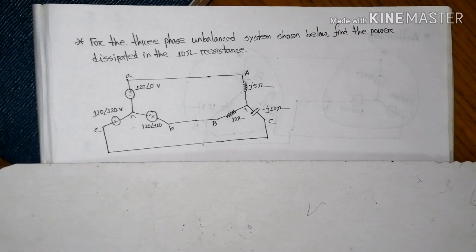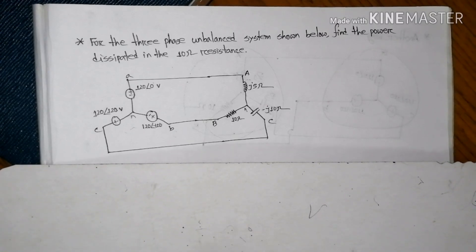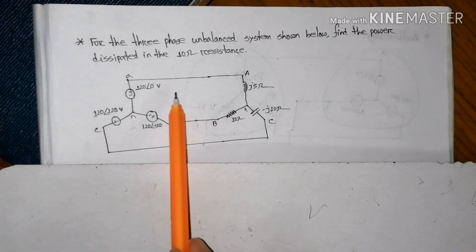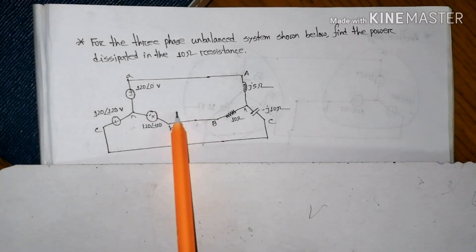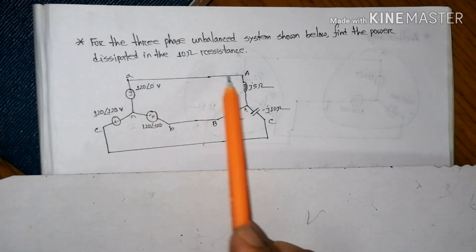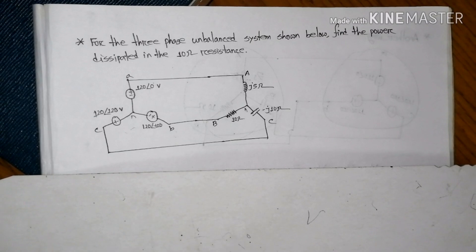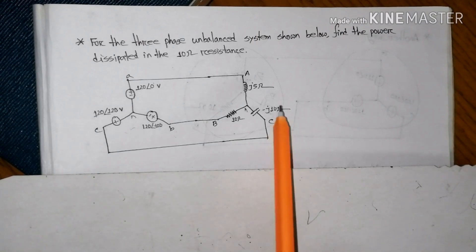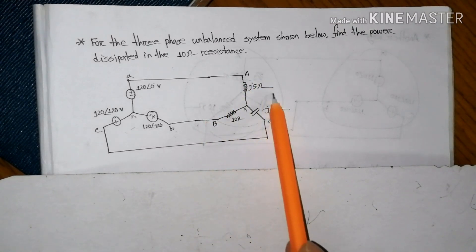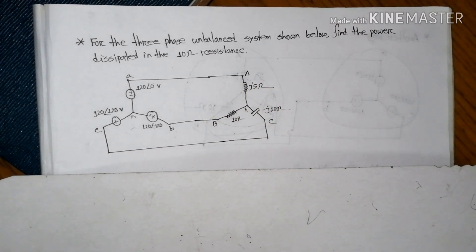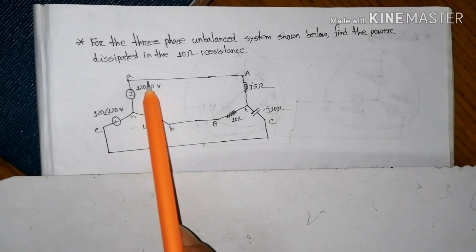If you have a system that is balanced or unbalanced load, you need to be able to find the current. The way we do it is very simple — we need to solve for the currents I1 and I2 in the unbalanced system.